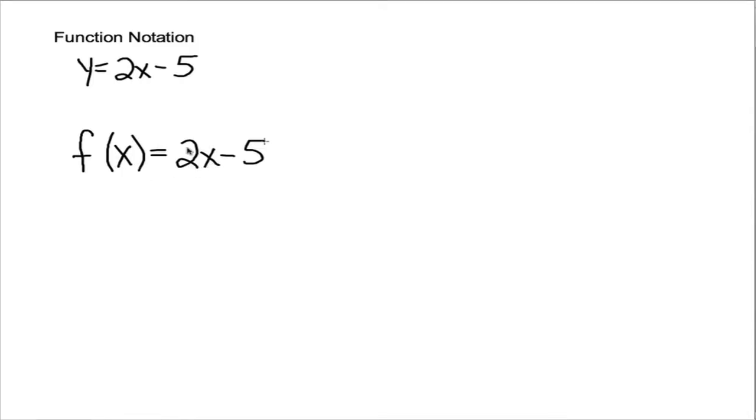x is still the independent variable. This is read as f of x. It means the value of f, the value of f, at x. So this is how you read it. It's f of x equals 2x minus 5. This notation, f of x, means the value of f at x.